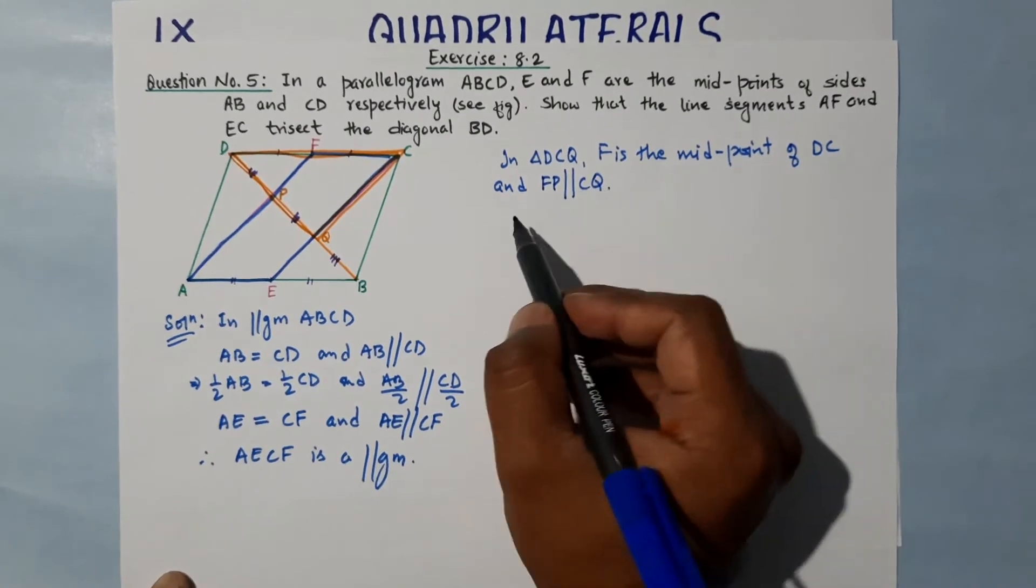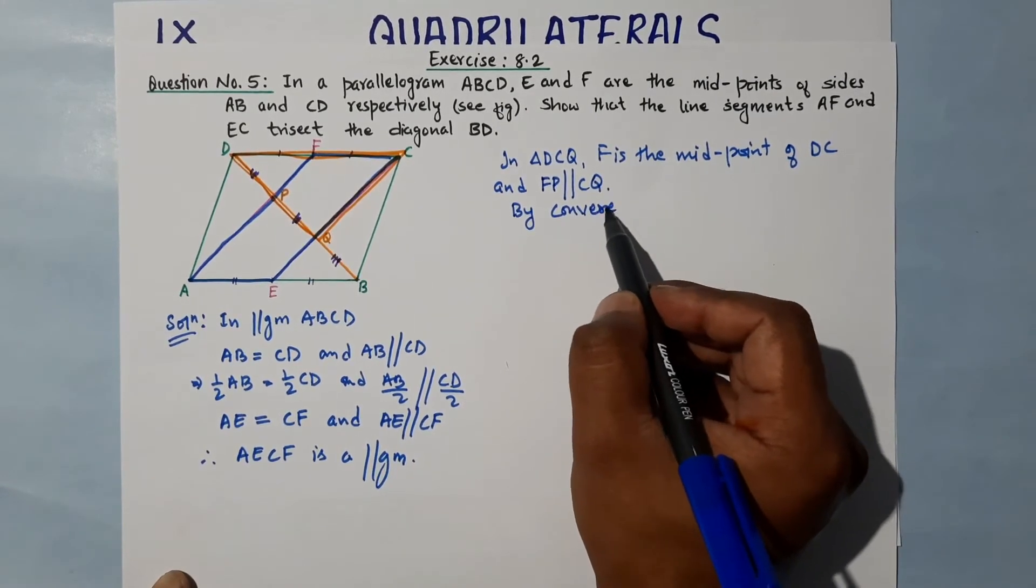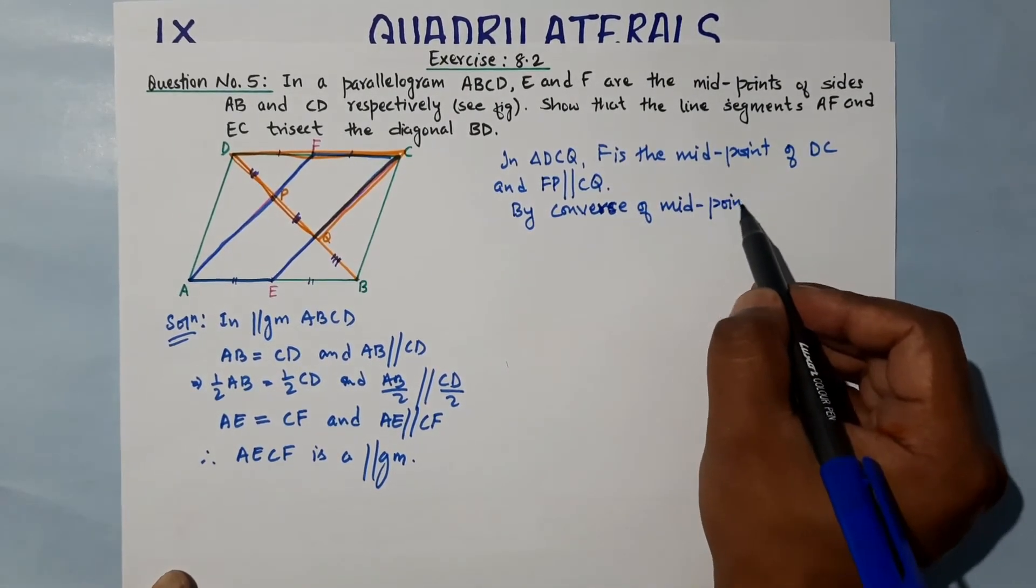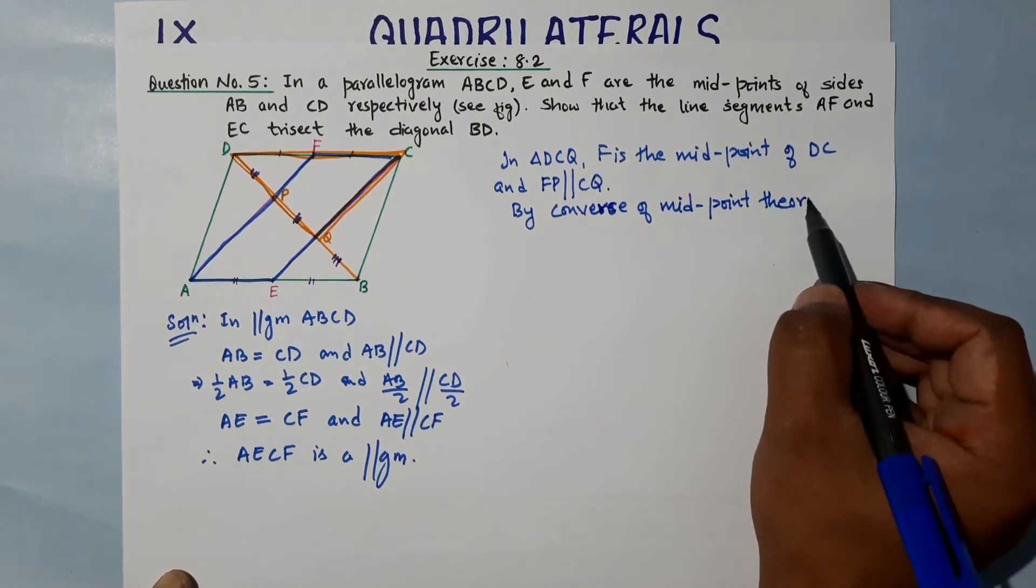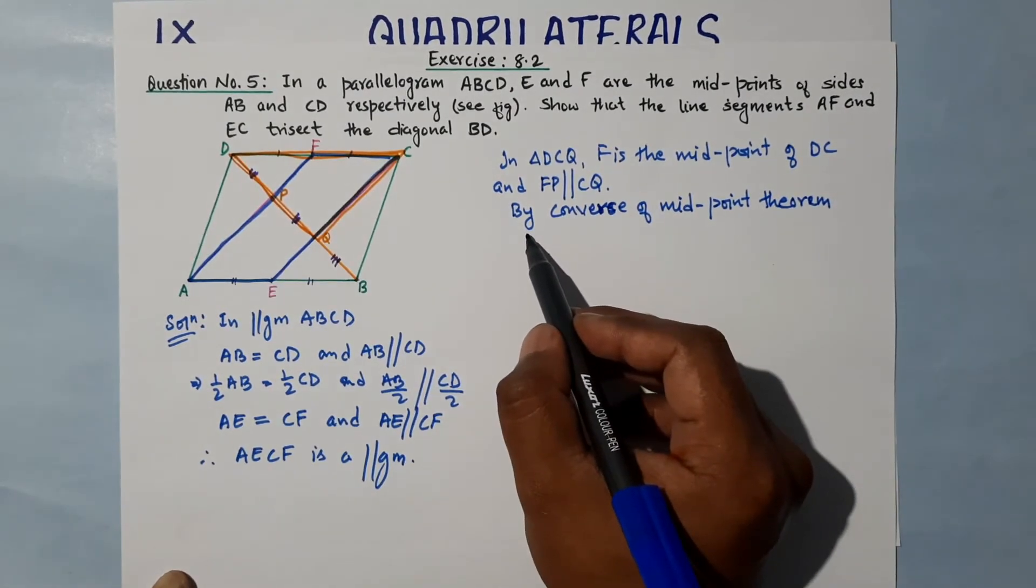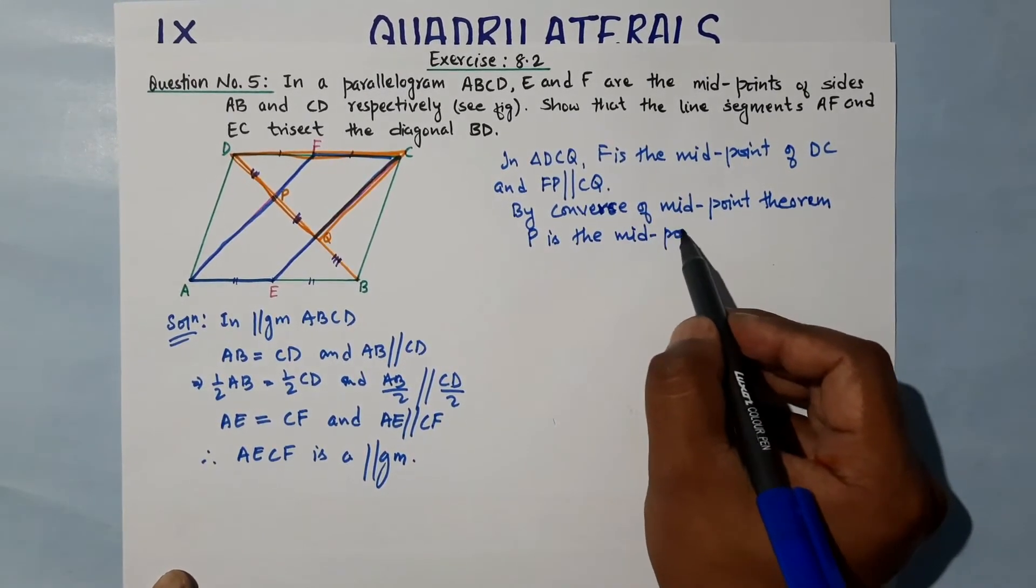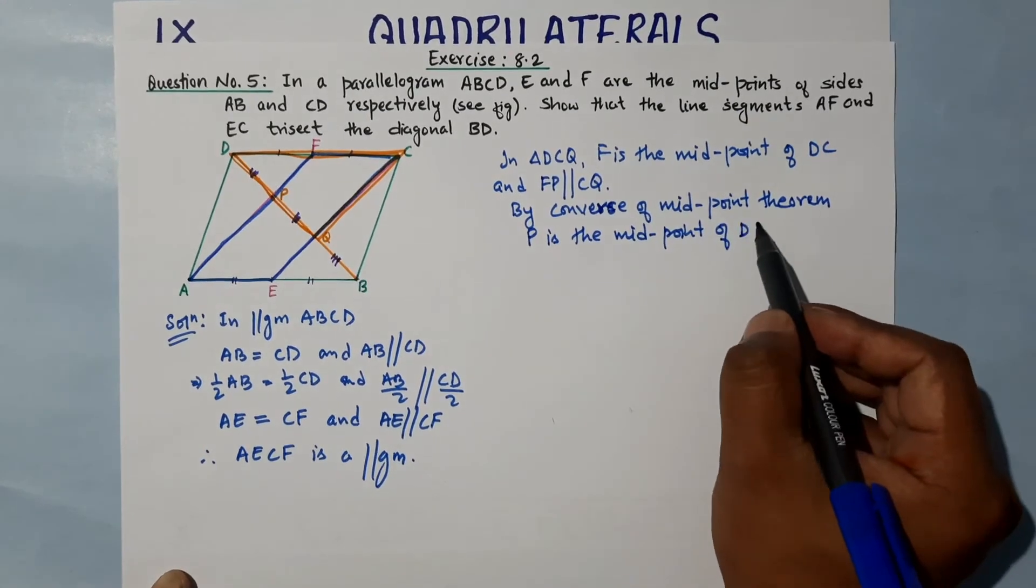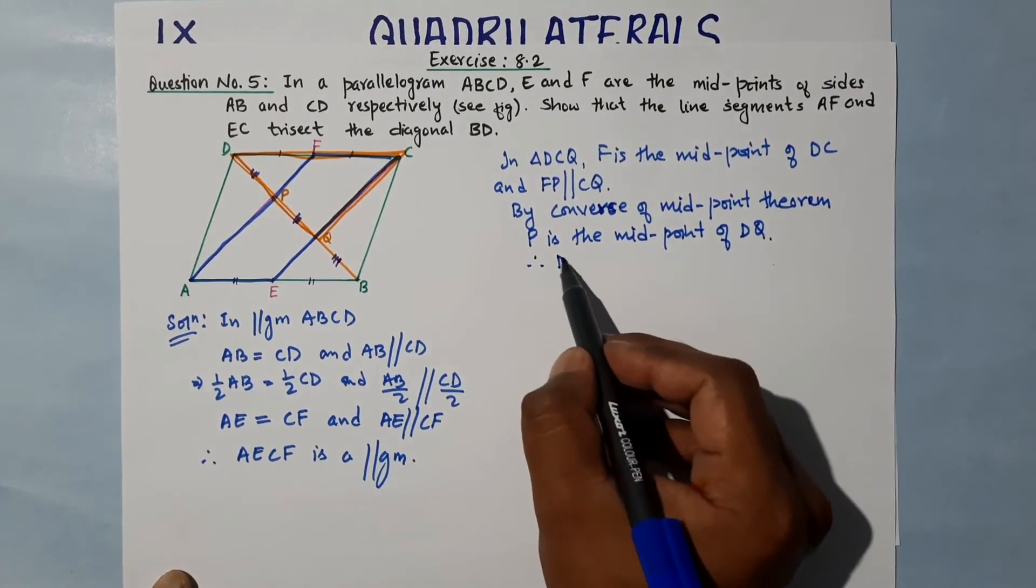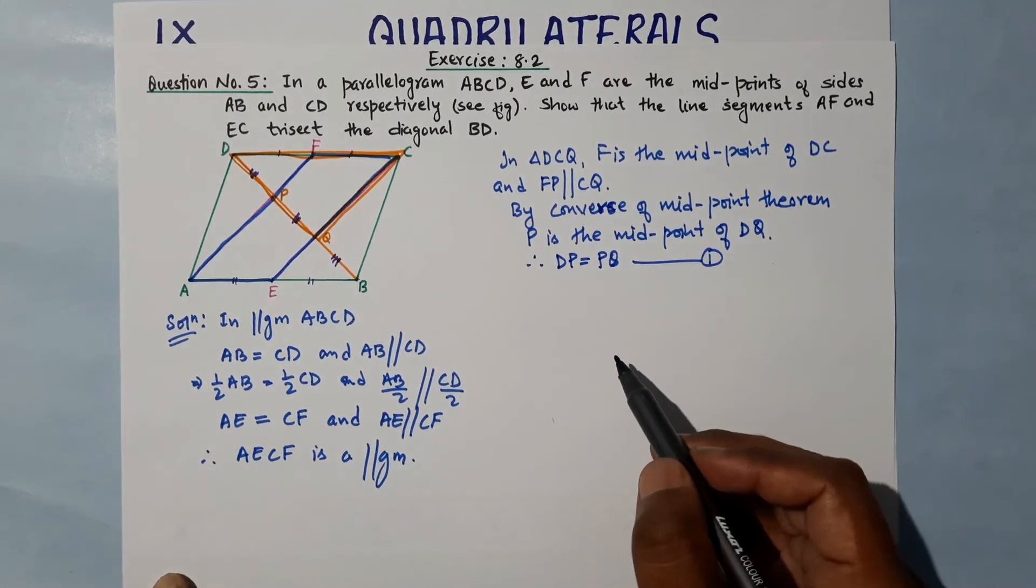...because AECF is a parallelogram, that means this line and this line are parallel. FP is parallel to CQ. Therefore, by converse of midpoint theorem, P is the midpoint of DQ.